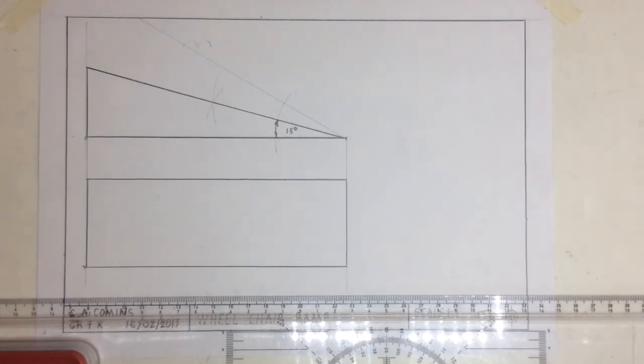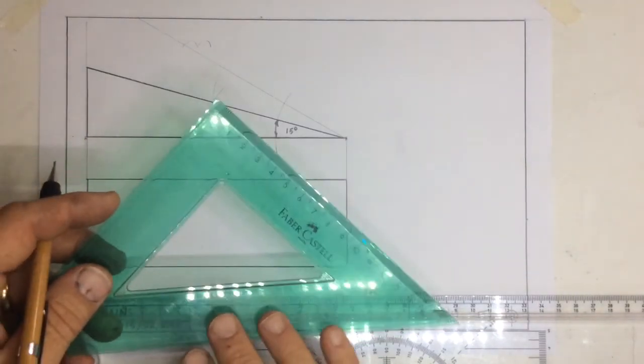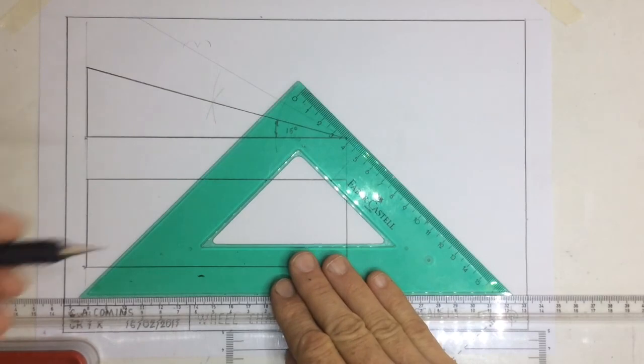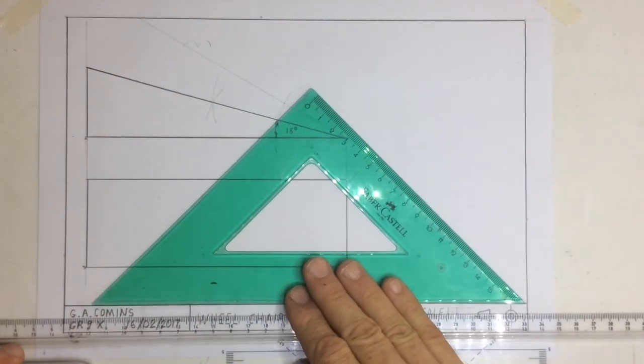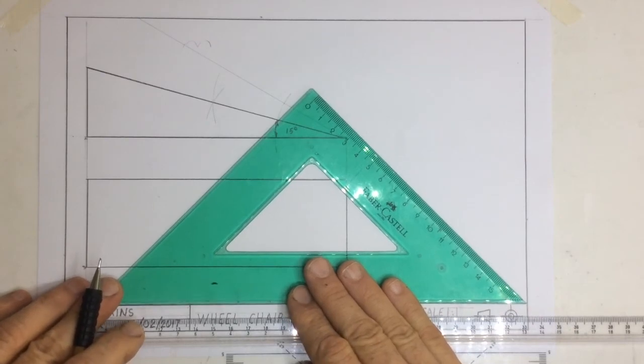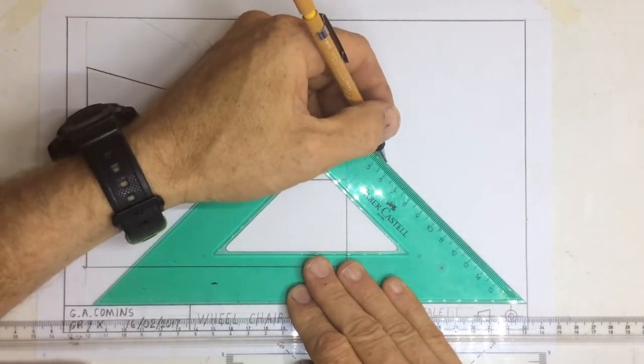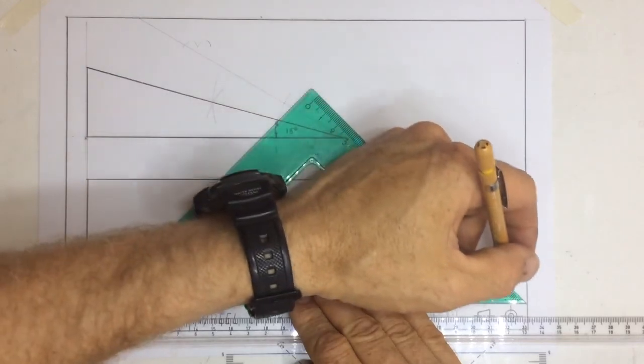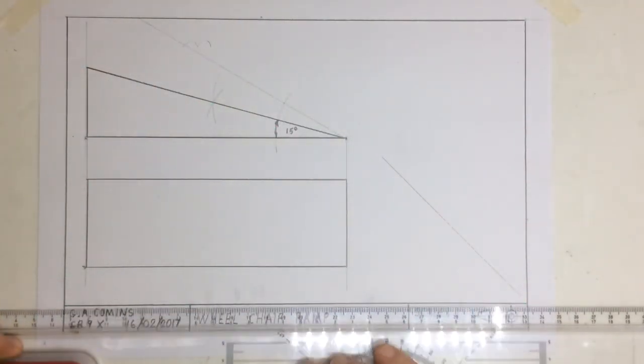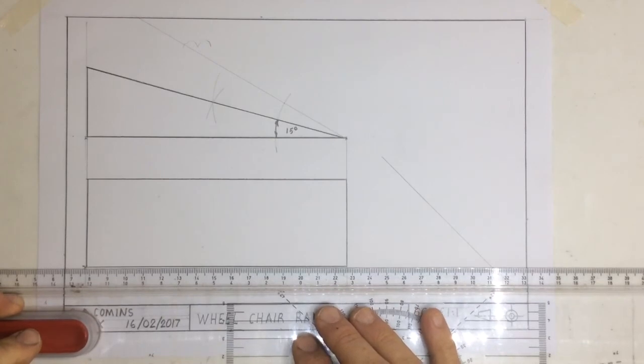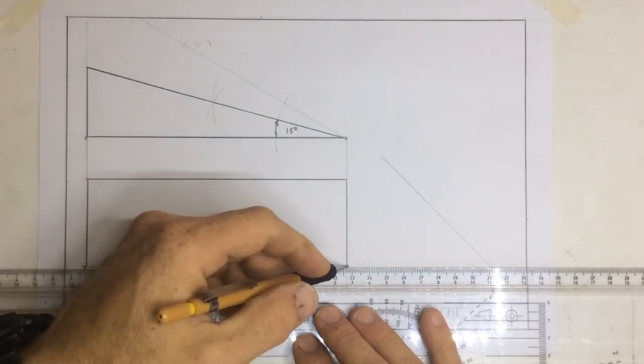After I've done that, I'm now going to draw a 45 degree line. If you go to this line at the bottom, take your set square, line it up, and just draw a 45 degree line in construction lines going over there.